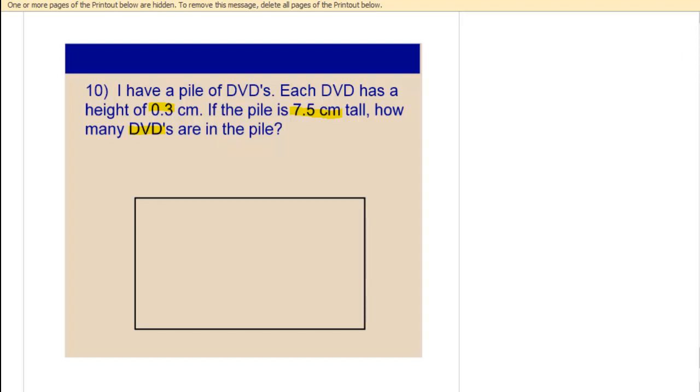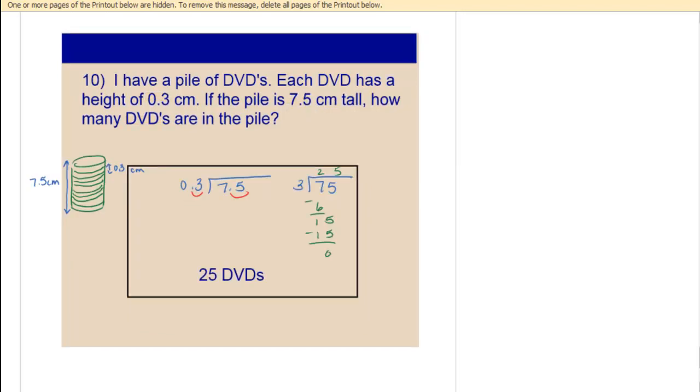So go ahead and give this one a shot and check back to see how you did. So in number 10, you end up with this tall pile of DVDs. It's 7.5 centimeters tall. And so that was the total pile. And then we know that each individual DVD is .3 centimeters.